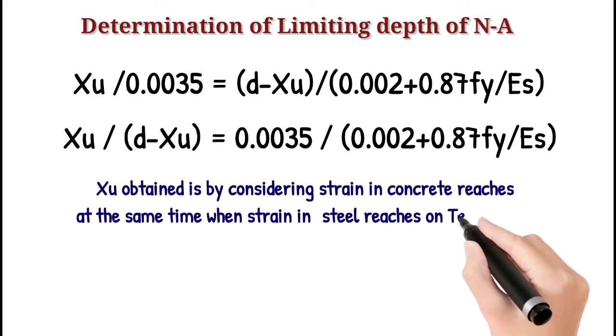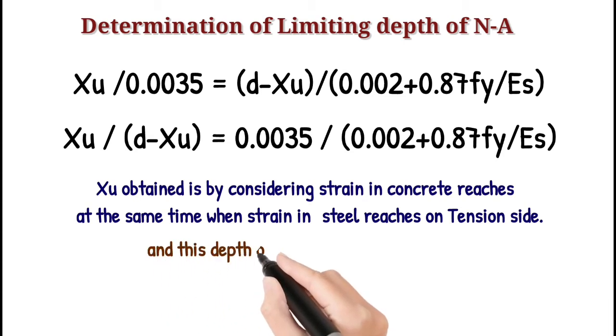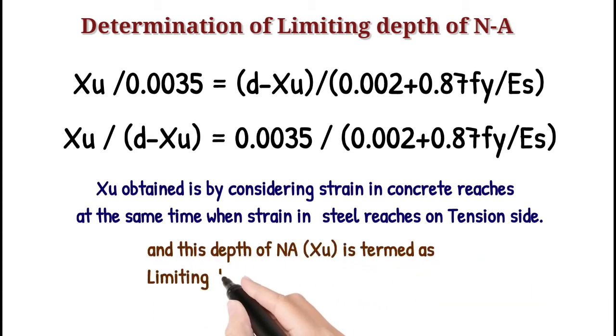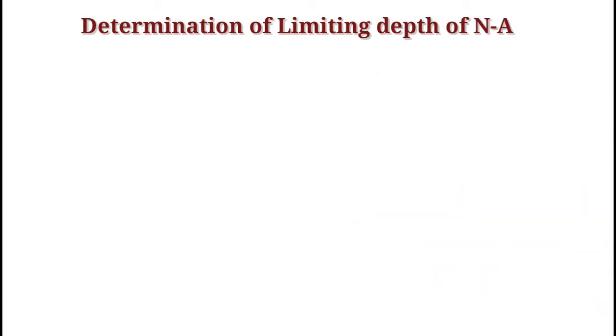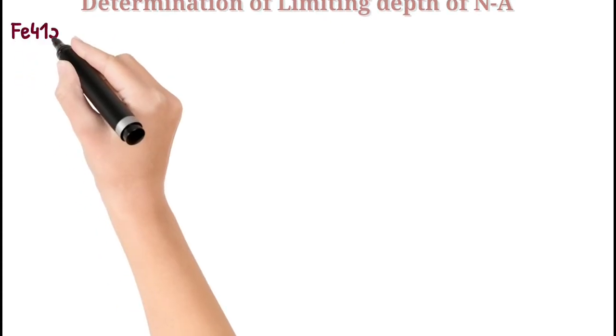We denote it by Xu max and Xu limited. This value of Xu limited can be obtained by substituting the values of grade of steel and Es. Let's find the value of Xu max for Fe415 grade steel and M20 grade concrete.